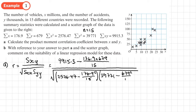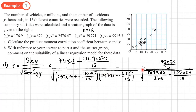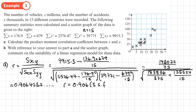We work out each component on the calculator, writing down the exact values. Calculating the full expression gives 0.9064237..., which we round to three significant figures: R = 0.906.